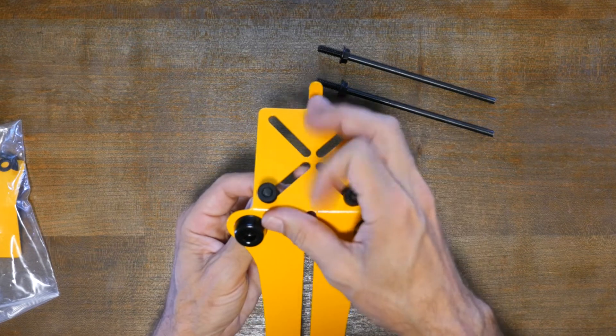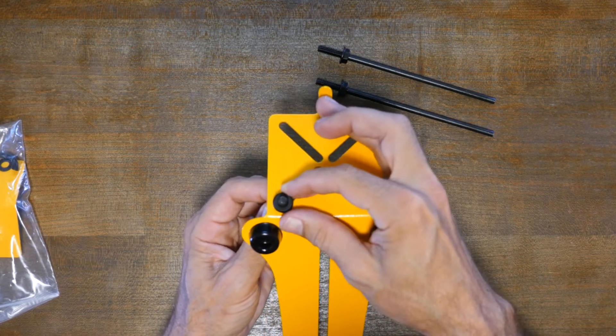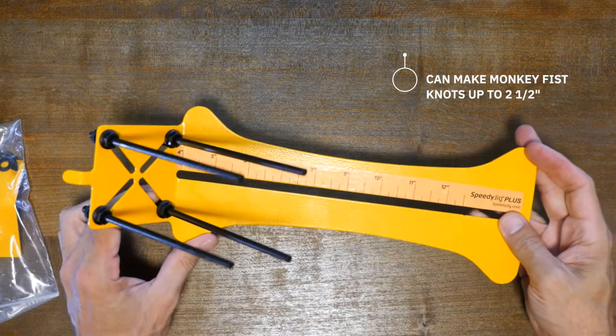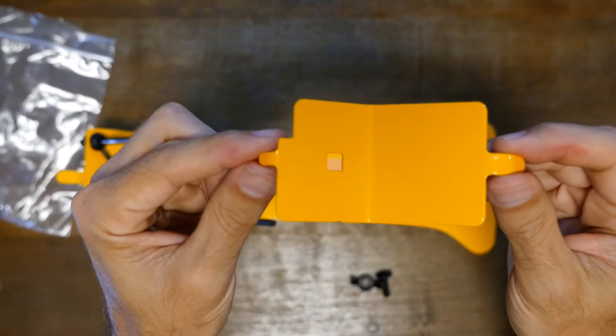For now, I just want to set it up and have a look at the jig and make sure everything's here and works. So this is basically what the jig looks like as a Monkey Fist knot jig, but there's still more to do.